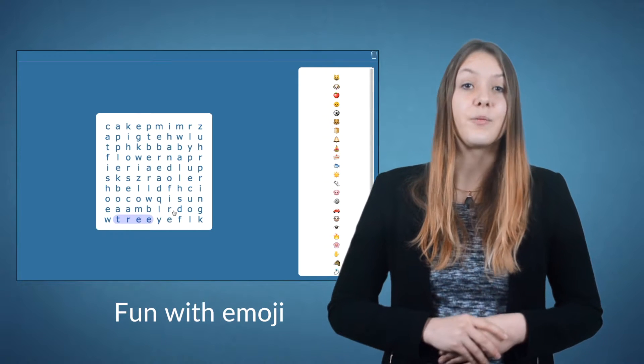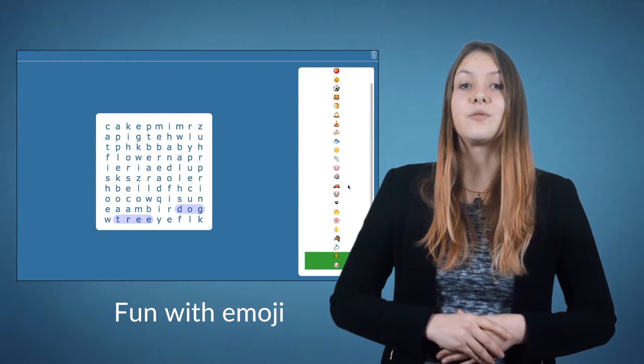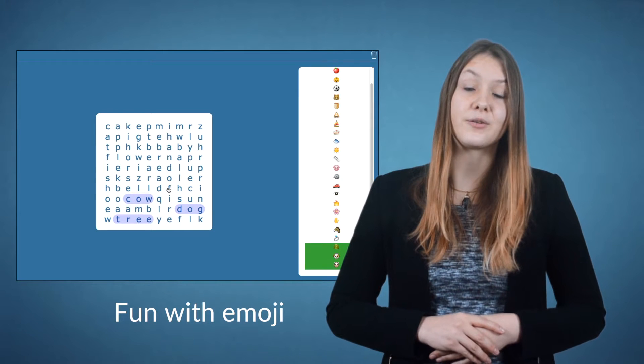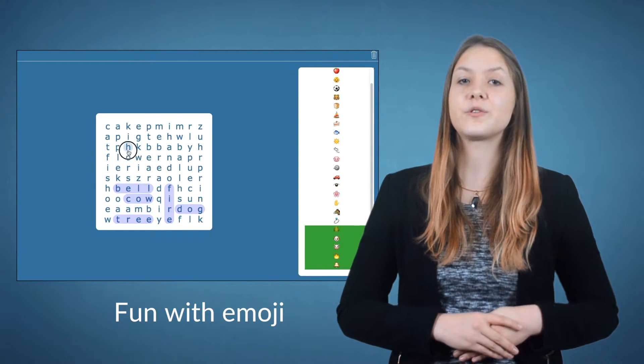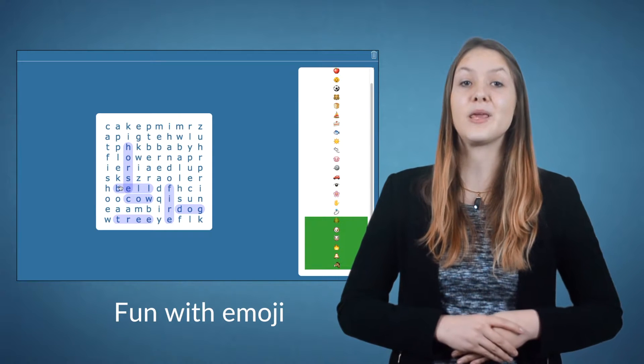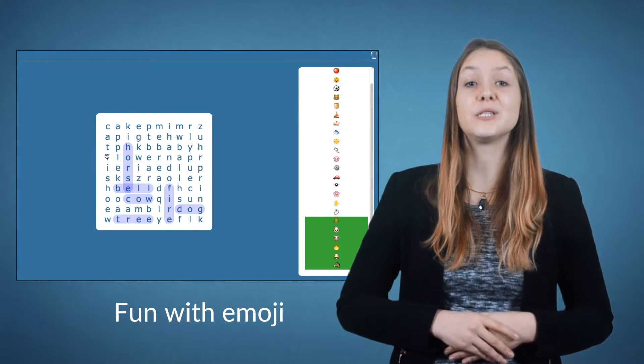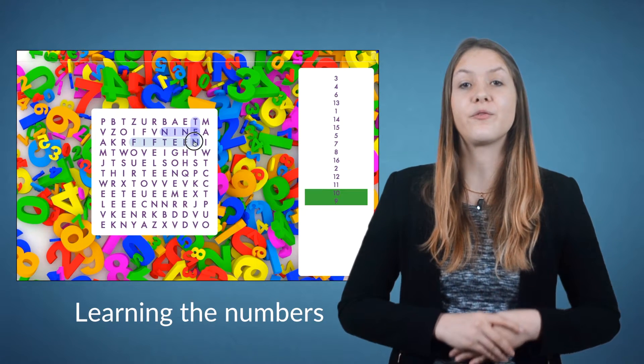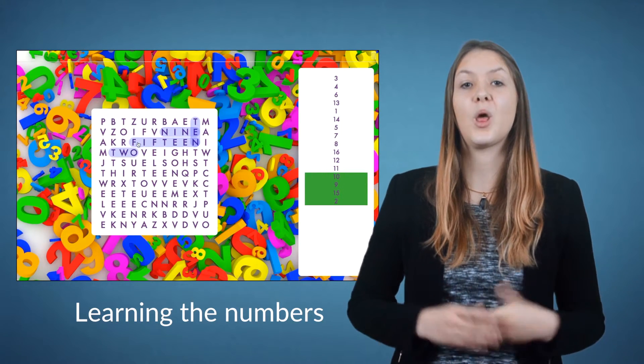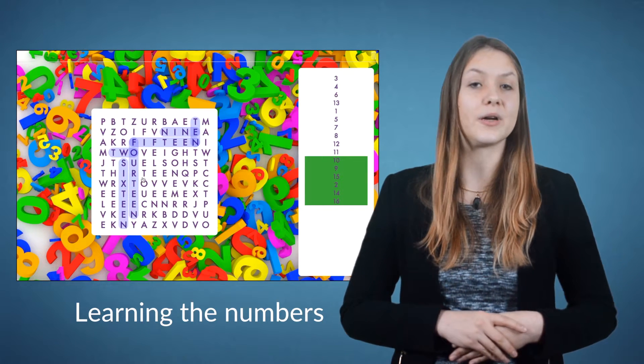An easy way to start off is by letting them search for simple words from a list. They can match the letters from the description list with the letters in the center to get to know the letters and words. You can make things a bit harder by removing the words from the list and replacing them with emoji, giving them the chance to learn the letters by heart. Word search puzzles can also help with the first steps in math—learning the numbers and how to write them.